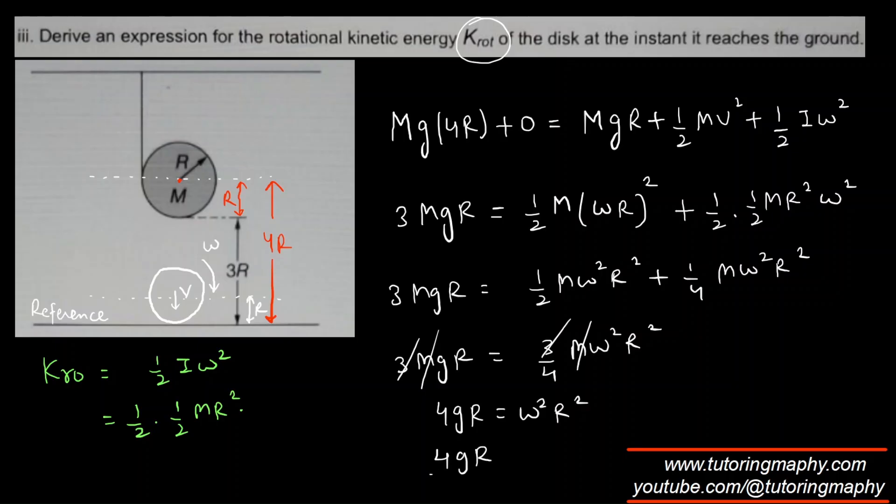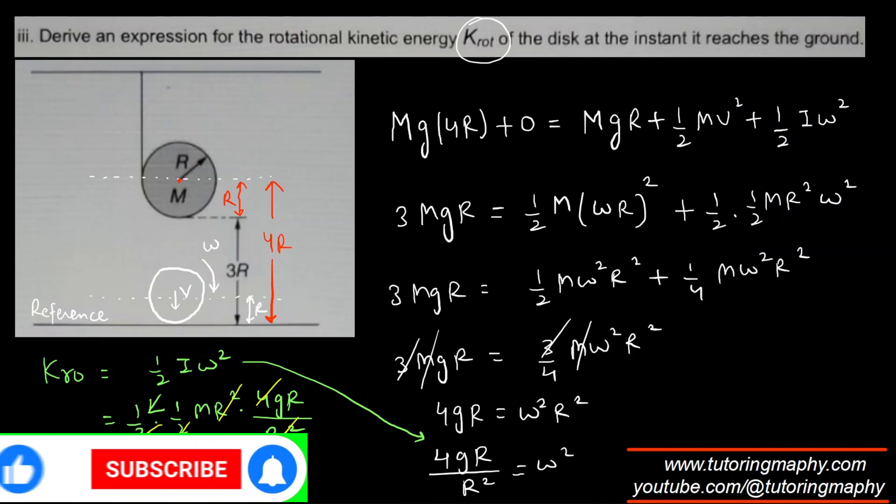And what is the rotational kinetic energy formula? K rotational is half I omega square. So it would be half I is half MR square and omega square, sorry, omega square R square. So let me find omega square. So 4 GR over R square is omega square. Obviously one R can be canceled. Half remains as it is. I is this portion and omega square is now here which is 4 GR over R square. 2 and 2 is 4. 4 and 4 is gone. R square and R square is gone. That's fun. We are just left with MGR. Well who would have thought that? This is our answer.